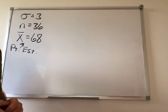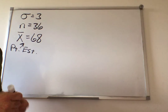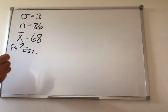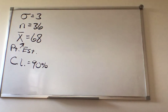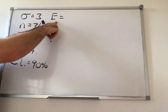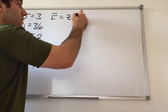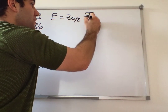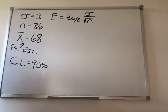Find a confidence interval estimate for the population mean exam score — specifically, find a 90% confidence interval. So confidence level equals 90%. First thing you need to do is find your error. The error formula is z of alpha divided by 2 times sigma divided by square root of n. I have sigma and n; the only thing I don't have is z alpha over 2.